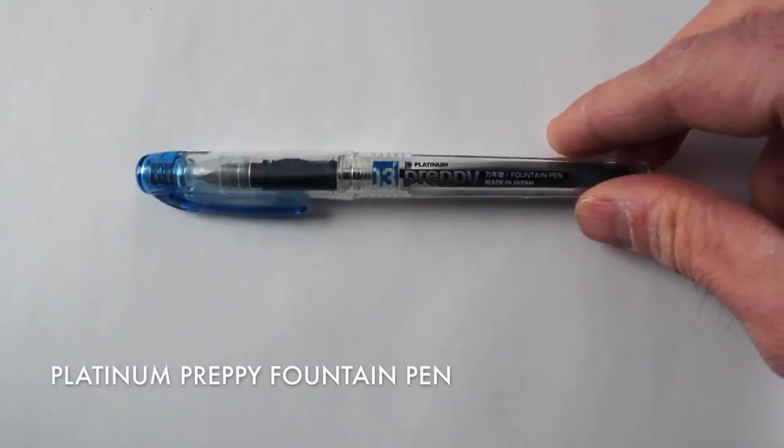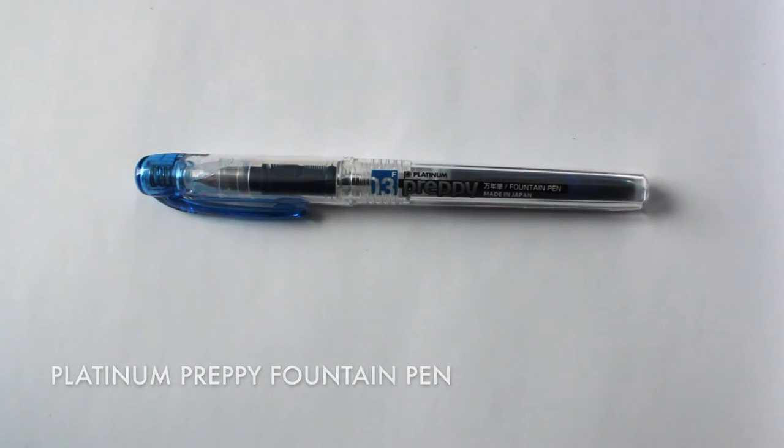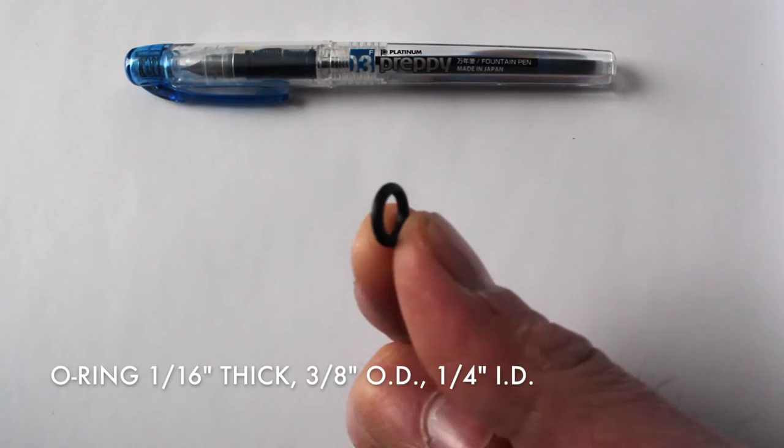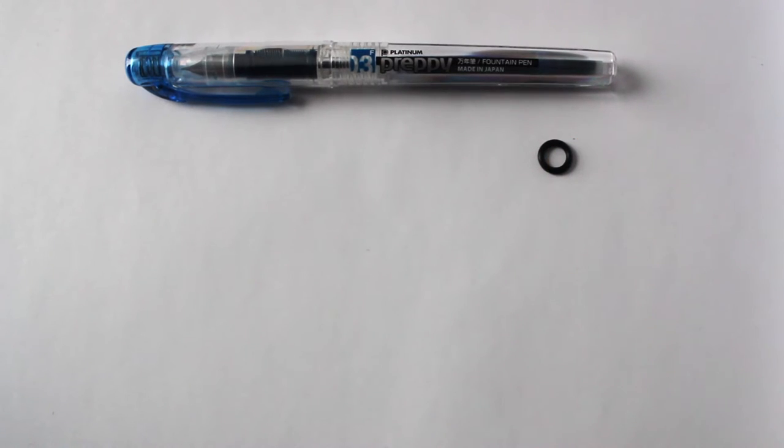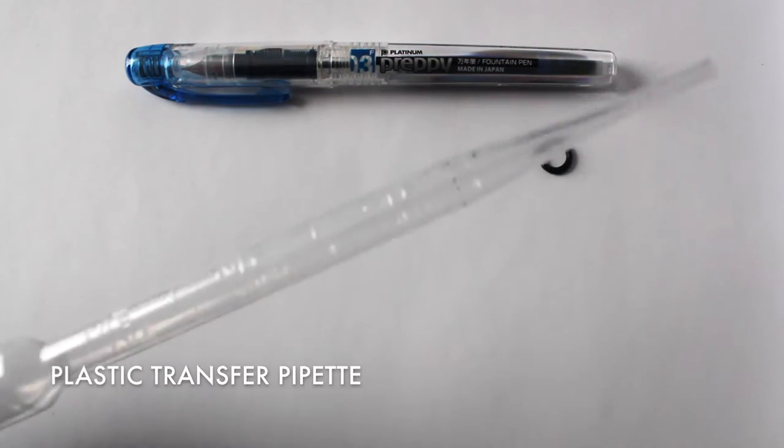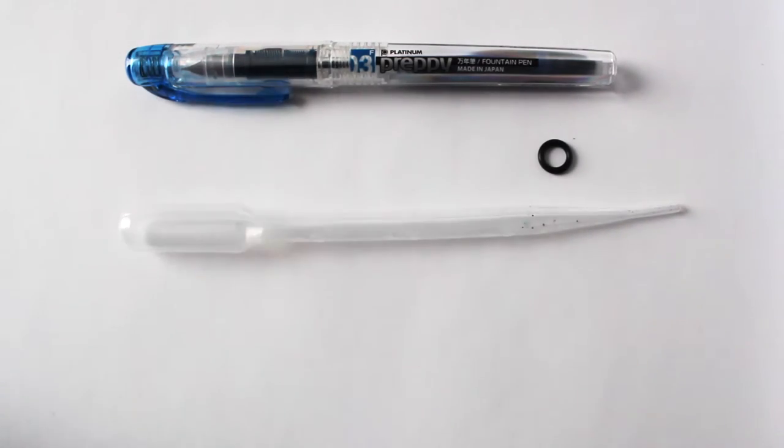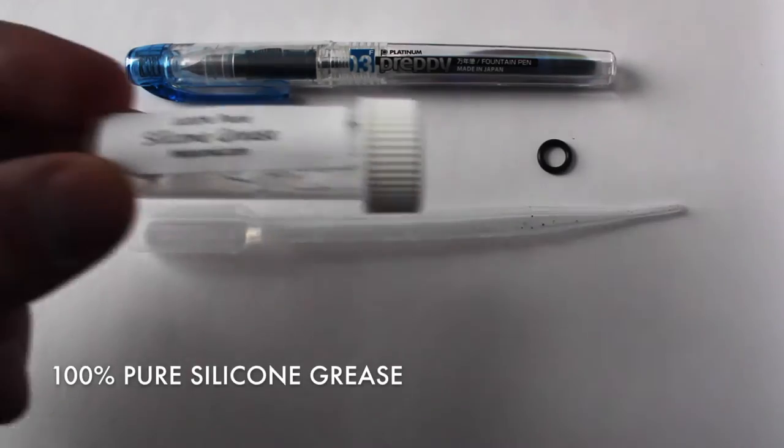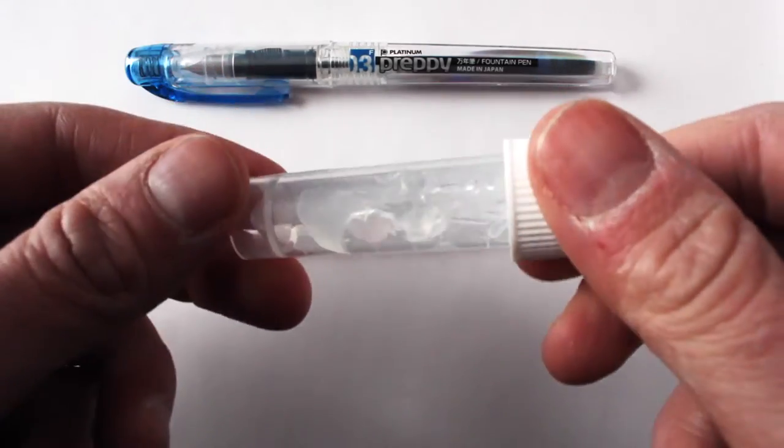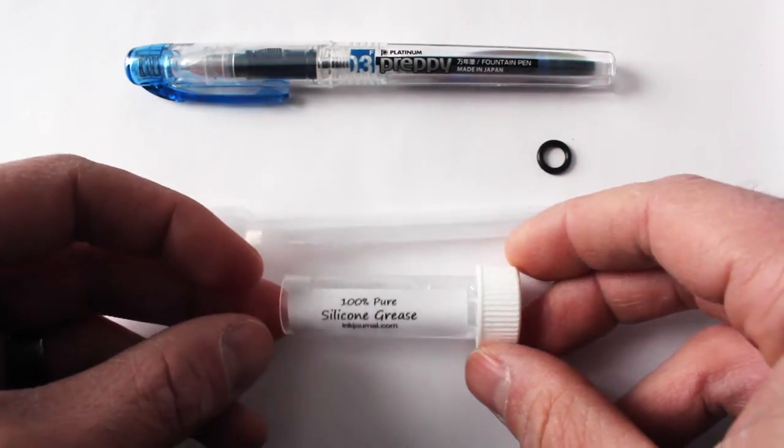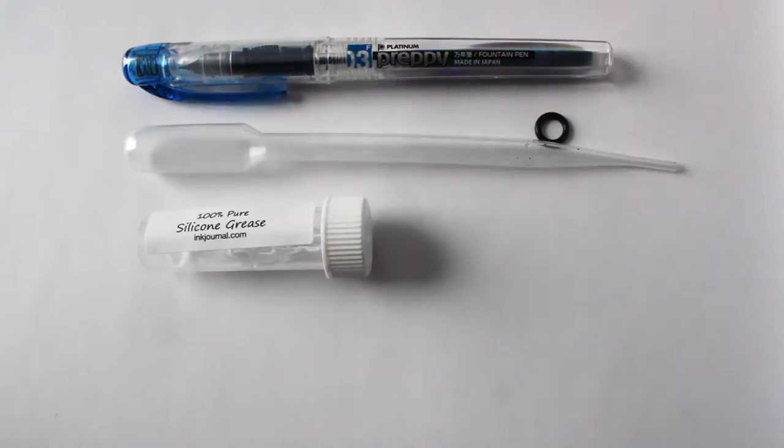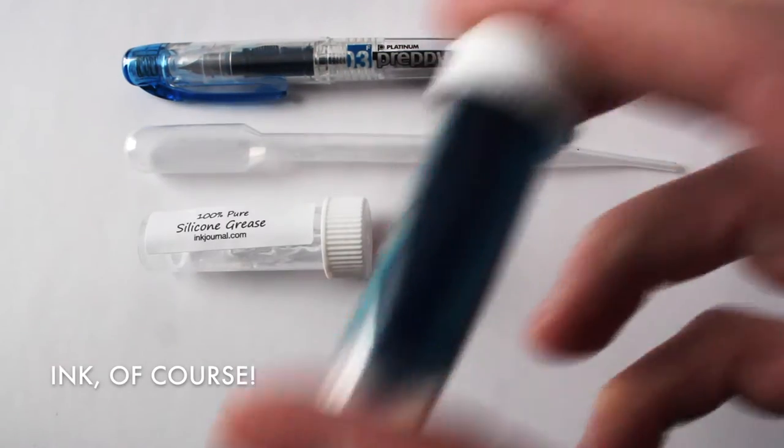First we have the Platinum Preppy fountain pen, then we have a simple o-ring, there's the dimensions there, and then we have a transfer pipette to transfer the ink. Next we have a little sample of 100% pure silicone grease, and of course we have the ink.